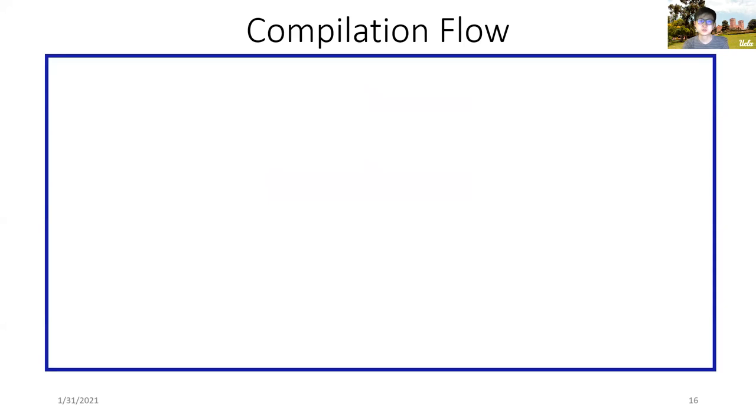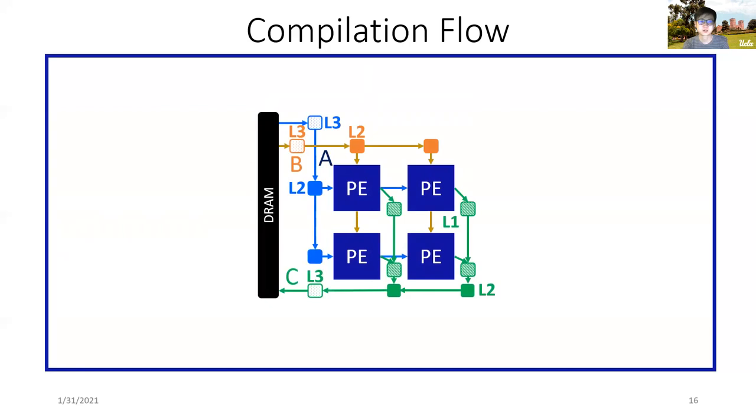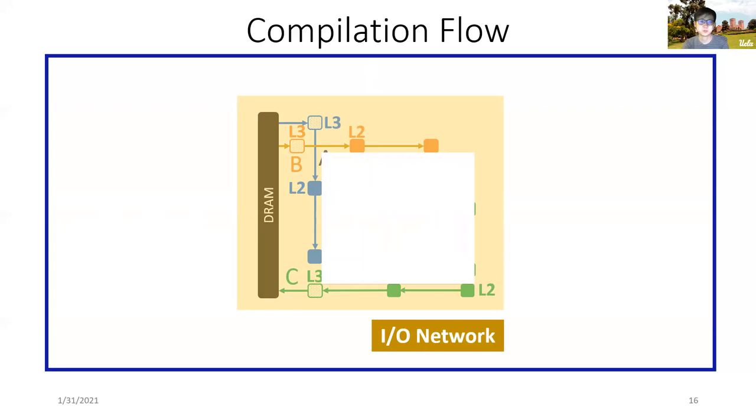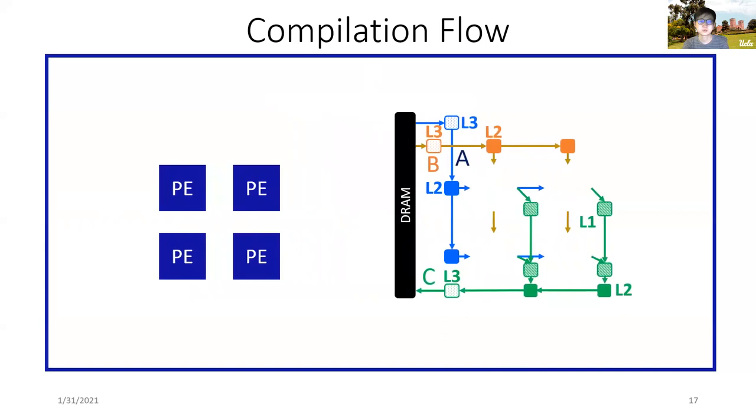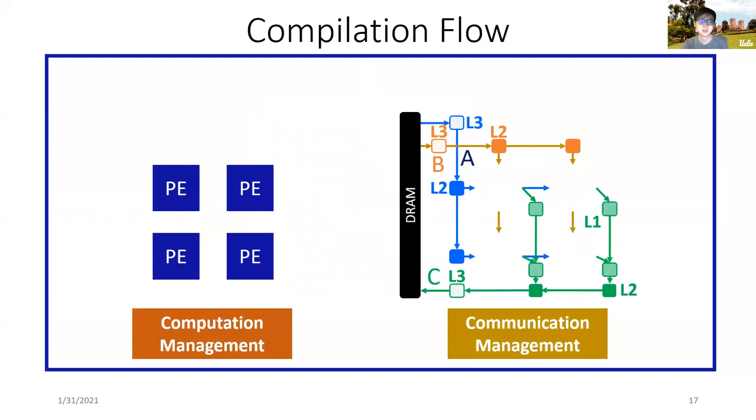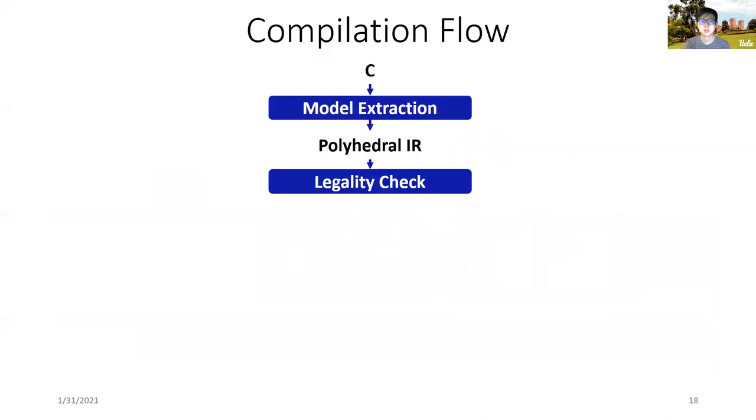After making sure that the input program can be mapped to a systolic array, we start to transform the program to a systolic array architecture. The figure in the middle shows the complete systolic array architecture for matrix multiplication. The systolic array is composed of two parts: the PE array and the I/O network. Both are critical to make the systolic array functional and to achieve high performance. In AutoSA, we separate designing of the PE array and I/O network into two separate stages to create a clear interface between the design and optimization process. These two steps are named as computation and communication management.